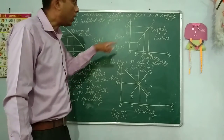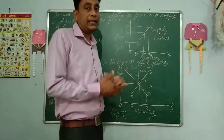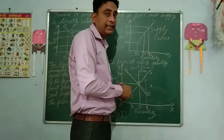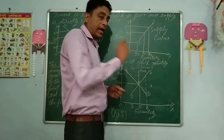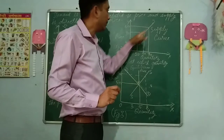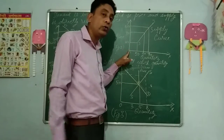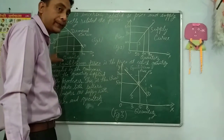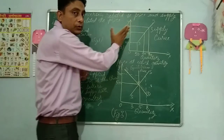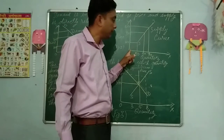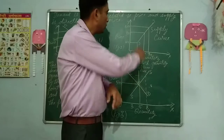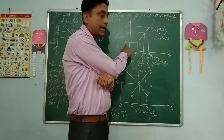Now comes Figure 2, which shows the supply curve. Again, OY axis is the price axis and OX axis is the quantity axis. The price of any commodity can never be zero, which is why the supply curve SS does not originate from the origin. It starts from a point above zero on the price axis.